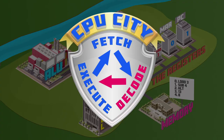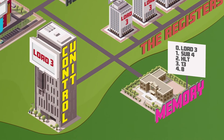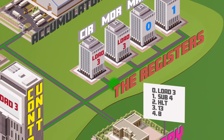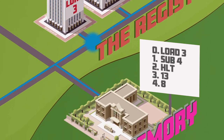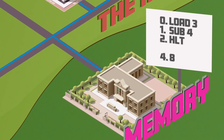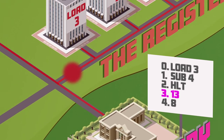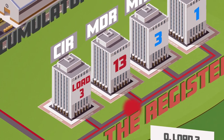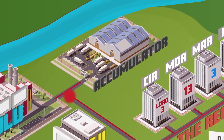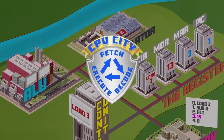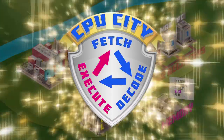The control unit can now tell the other components to execute the program instruction, and we're into the execute stage of the cycle. The three in 'load three' is an address, so the control unit first updates the memory address register. Then a signal is sent to retrieve the data stored at memory address three, before the data there is sent back to the memory data register and finally makes its way to the accumulator, where the number 13 is stored — bringing the execute stage to an end and completing the first fetch-decode-execute cycle.